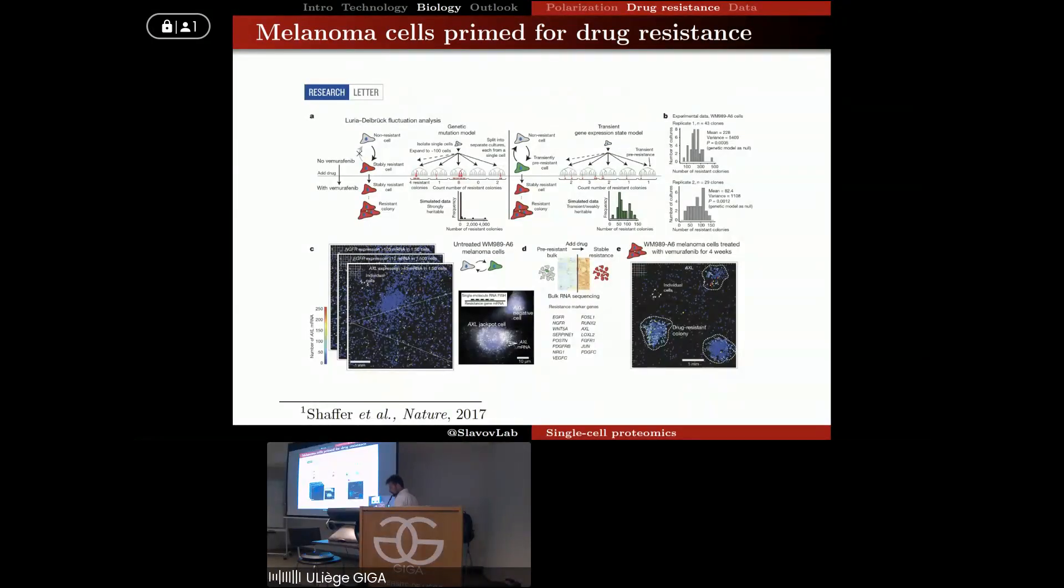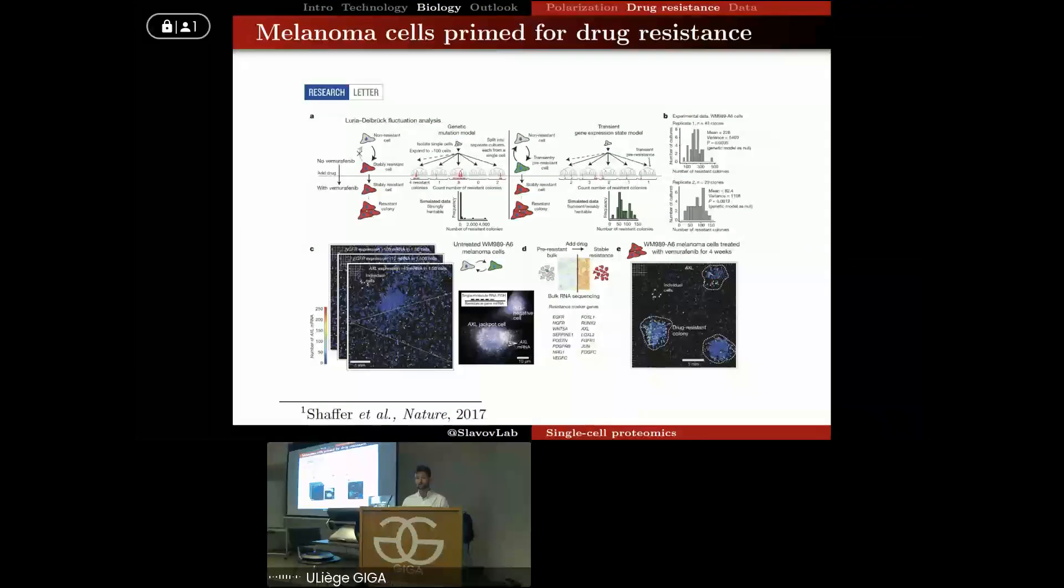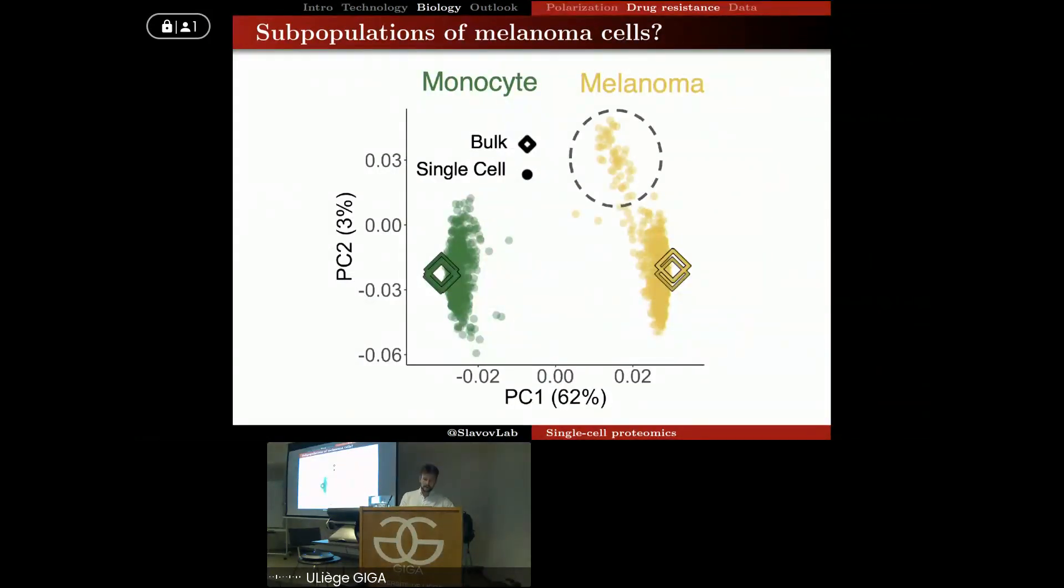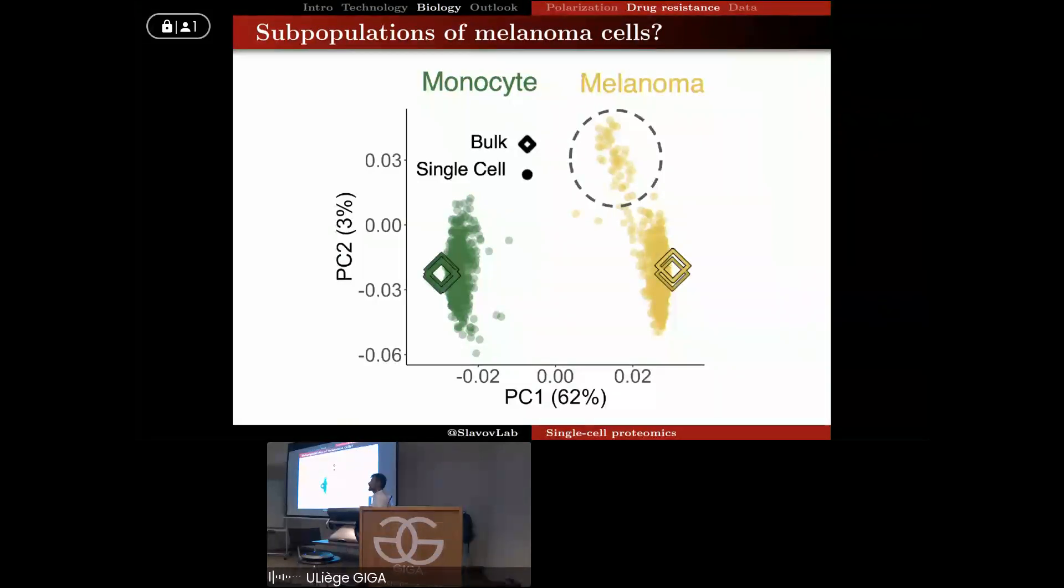So I'll switch here gears to tell you about another biological system to which we applied single-cell proteomics. And that was in the context of drug resistance emergence in melanoma cells using recently derived cell lines from patients. It has been used by Arjun Raj's lab and others to study the emergence of drug resistance in these jackpot cells - rare cells that develop drug resistance. So when we did this analysis, we also analyzed many monocyte cells. But what we found with these melanoma cells is that there are two distinct clusters present in the cells.